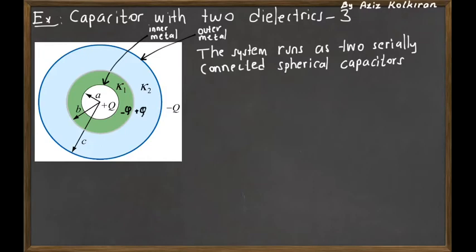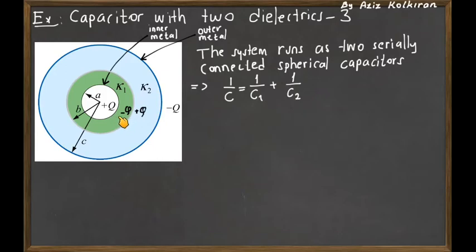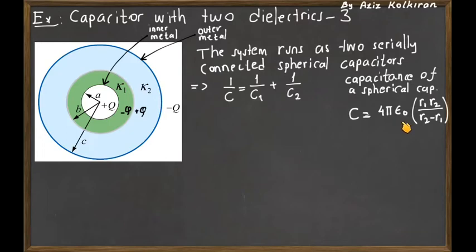Once we do this, we have two spherical capacitors which are serially connected to each other. That means we apply the rule for finding the equivalent capacitance of two serially connected capacitors. The capacitance expression for a spherical capacitor is 4π ε₀ times the radius of the inner shell times the radius of the outer shell, divided by the difference between these radii, assuming vacuum or air as the insulator between the plates.